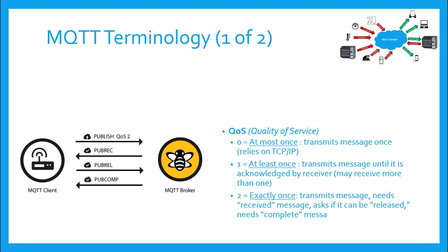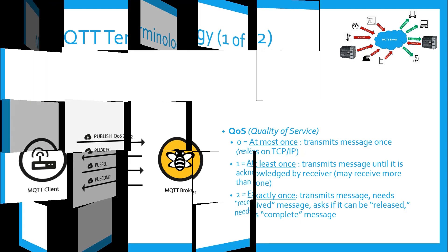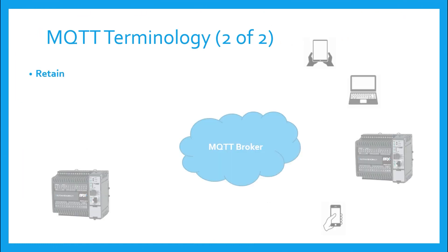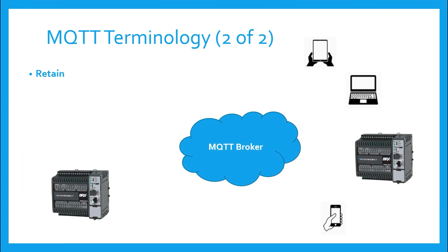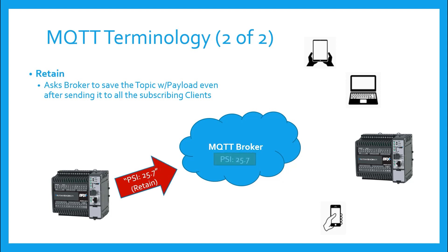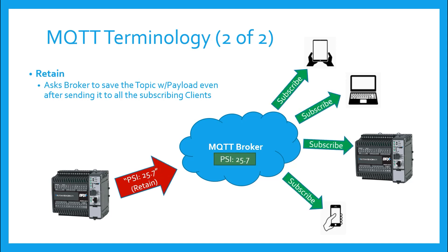Two is exactly once, meaning that the message needs not only an acknowledgement from the receiver, but other qualifying exchanges as well. The BRICS PLC does not use a QoS of 2. Retain — this bit is associated with a published topic, and it tells the broker whether or not to retain this topic even after sending it to the subscribers. If it is set to not retain, then the broker will delete the topic after sending it to the subscribers.